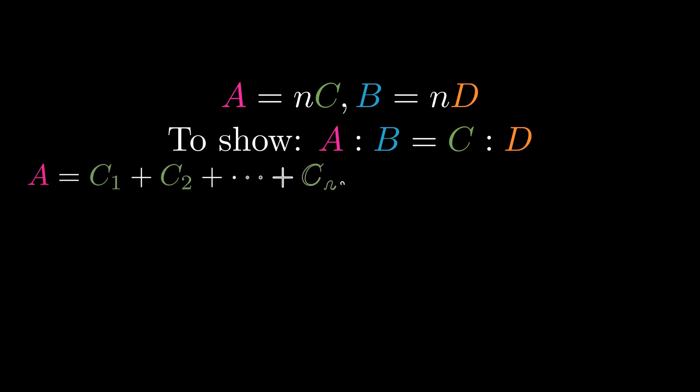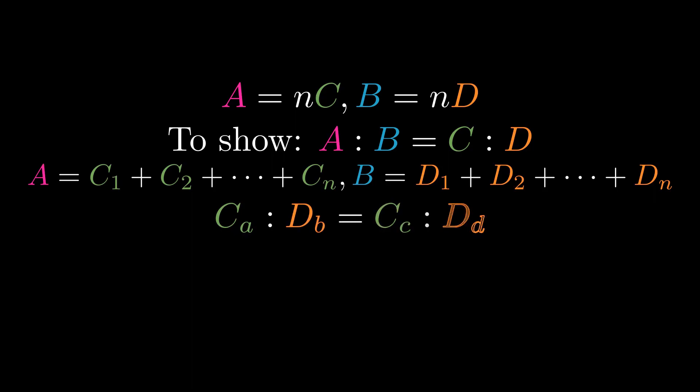A is made up of N C's and B is made up of N D's. Since all the C's are equal and all the D's are equal, any C to any D is proportional to any C to any D.